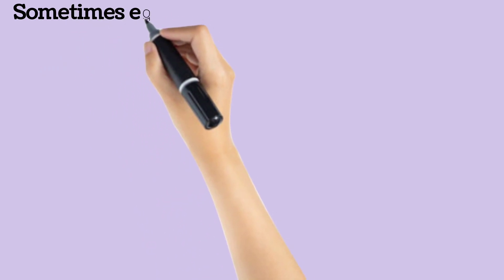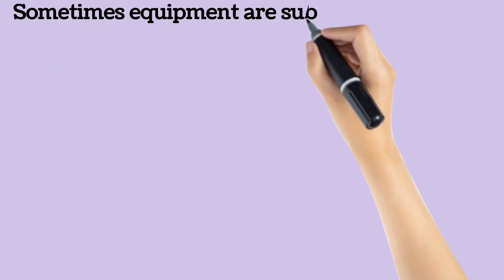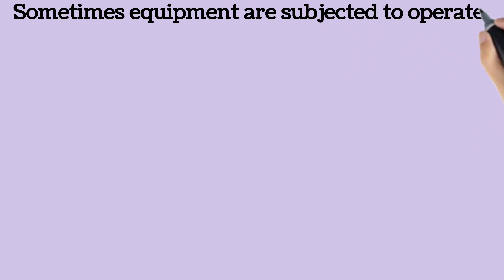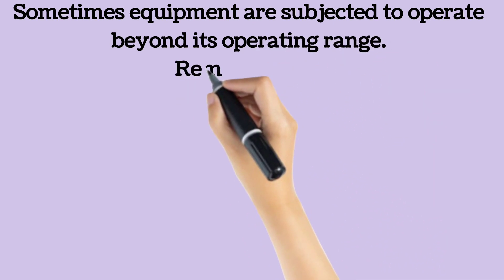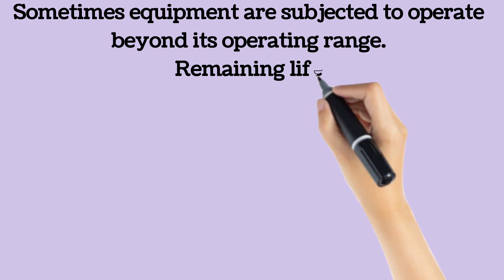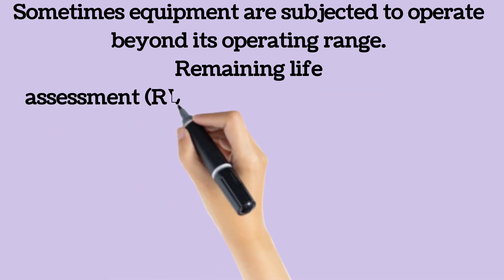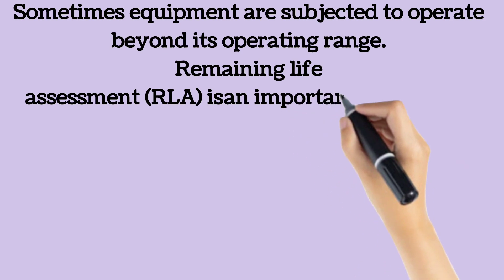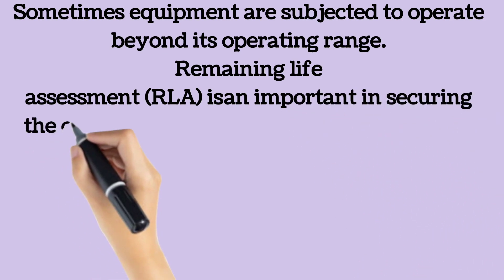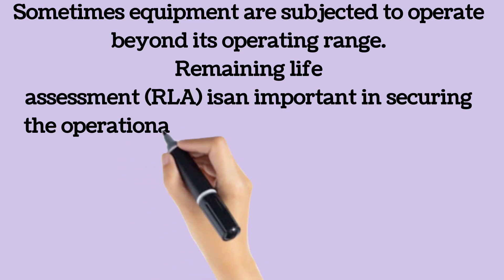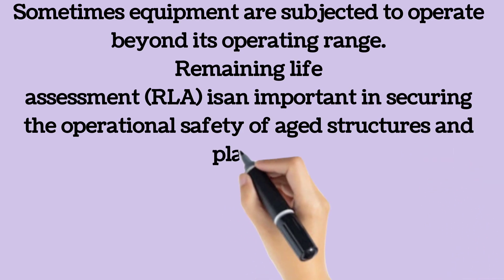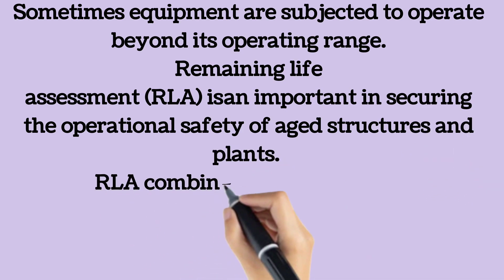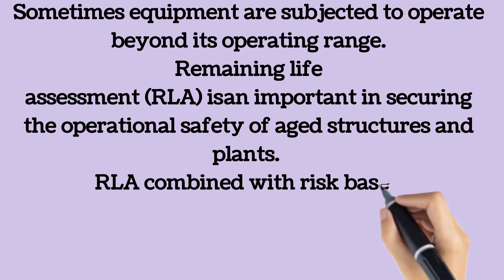The equipment in a thermal plant, many a time, is subjected to operate beyond its operating range due to grid disturbance and malfunctioning of controls, thereby adversely affecting the equipment lifespan. Remaining life assessment, RLA, is an important tool in securing the operational safety of aged structures and plants.